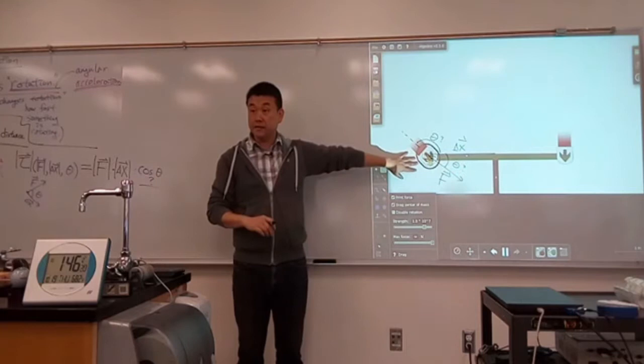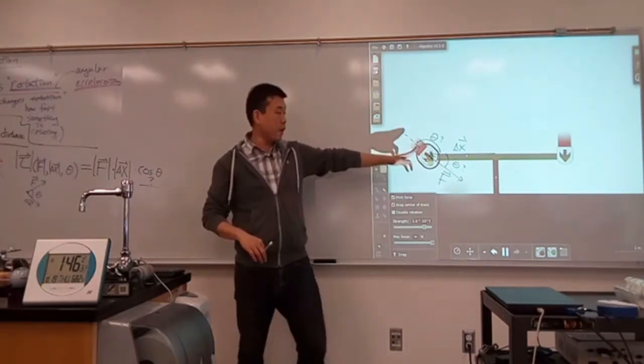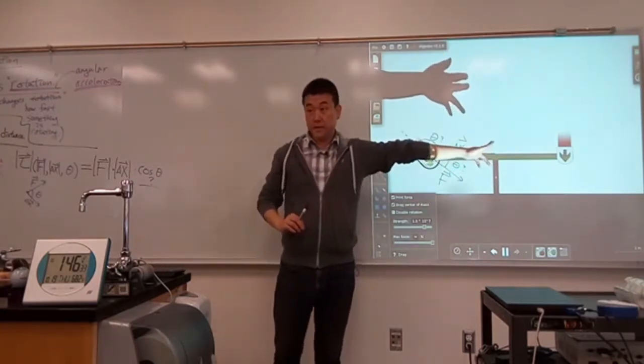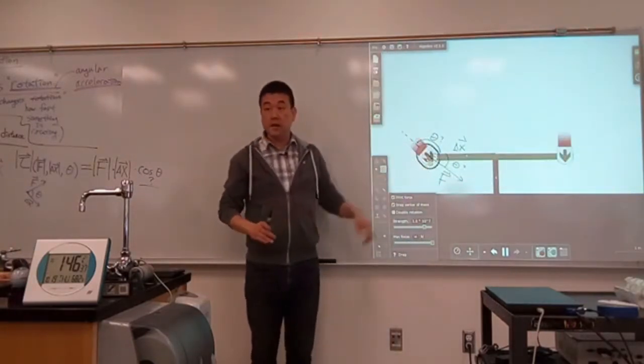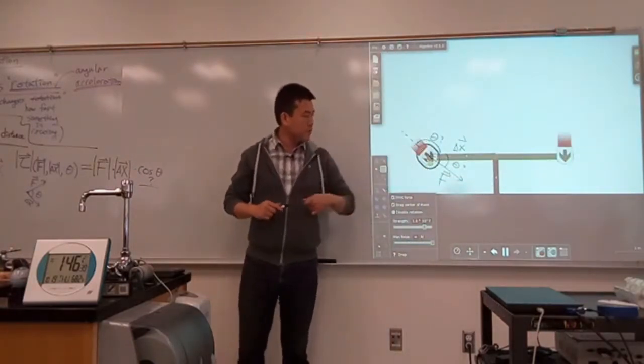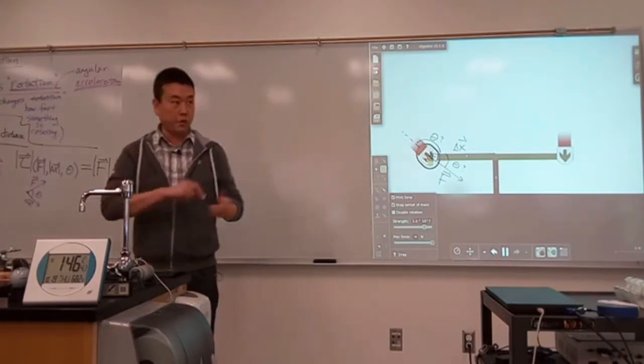So one way to look at it would be, so this is the displacement here. So this is my vector delta x. And this is my vector f. And I guess it depends on how you label your angle. You could be either labeling this angle here as theta, or this angle here as theta. But whichever, that's the angle, right?